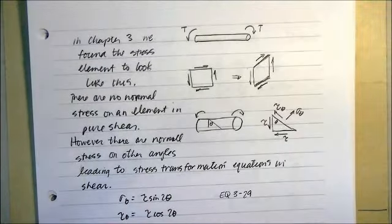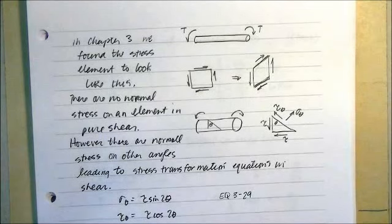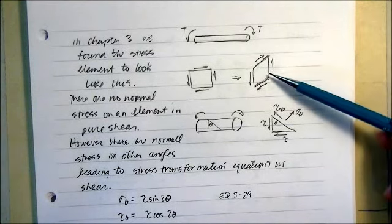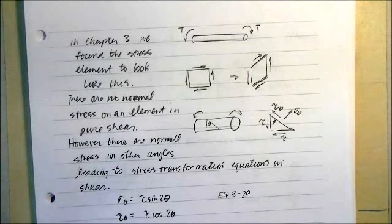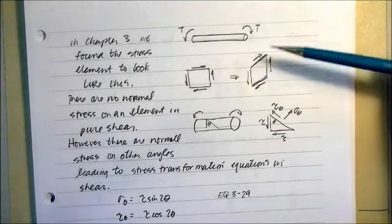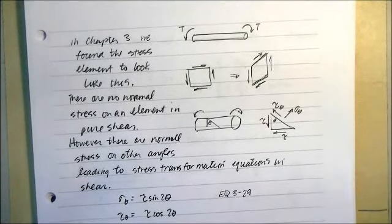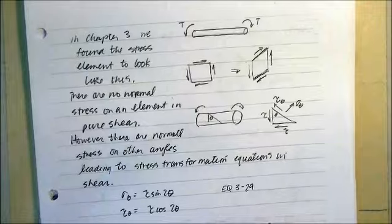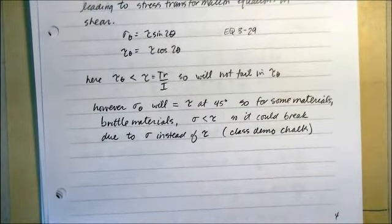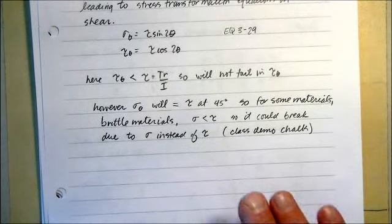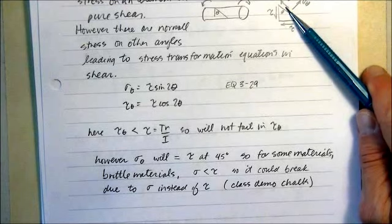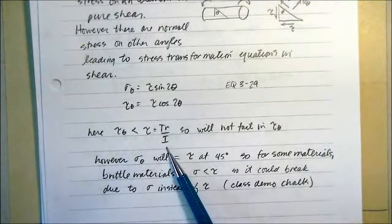That leads us up to chapter 3, where we found the stress element looks like this when you have a rod in pure torsion — you get pure shear, and the stress element is stressed on those sides. In pure shear, the maximum torsion occurs in one direction. However, on some other angle — like a seam or weak spot on the bar — normal stress also occurs. So we developed stress transformation equations in shear, which are repeated here as equation 3.29.